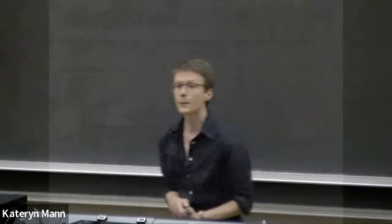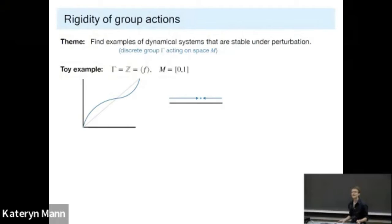So this talk is about a philosophy or a fruitful perspective for studying rigidity of group actions. The broad theme, the kind of theme you can even sell to a non-mathematician, is to find examples of dynamical systems. And for me, a dynamical system is a group, a discrete group acting on a space, typically a manifold. I want to find examples that are stable under perturbation. The selling point is understanding the phenomena that differentiate stability from chaos.